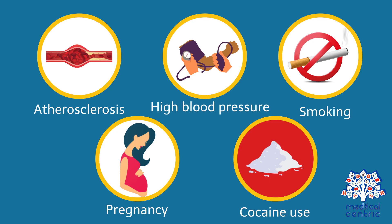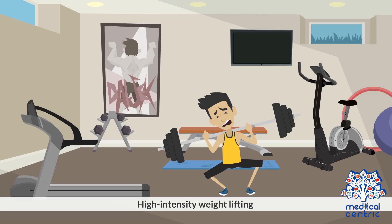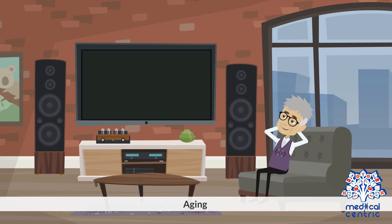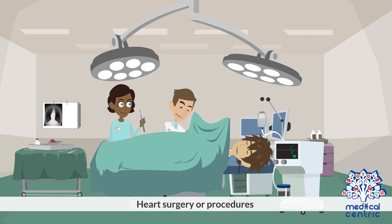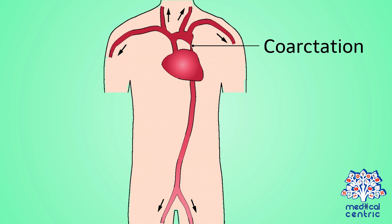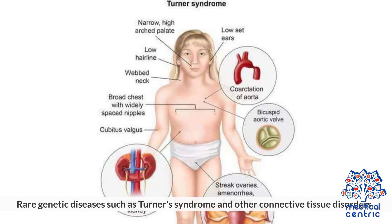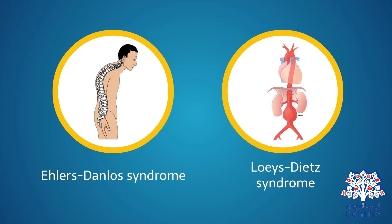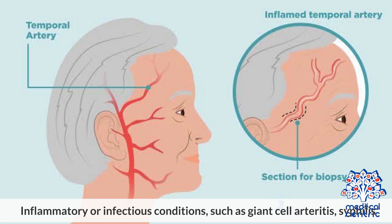Risk factors for the condition include: hardening of the arteries or arteriosclerosis, uncontrolled high blood pressure, smoking, pregnancy, cocaine use, a weak or bulging artery, high-intensity weightlifting, aging, heart surgery or procedures, coarctation or narrowing of the aorta, rare genetic diseases such as Turner's syndrome and other connective tissue disorders such as Ehlers-Danlos syndrome and Loeys-Dietz syndrome, and inflammatory or infectious conditions such as giant cell arteritis and syphilis.